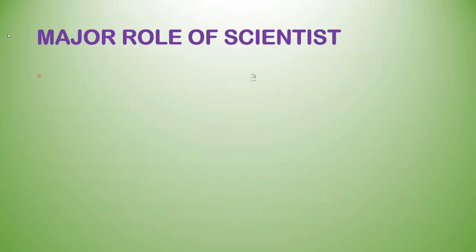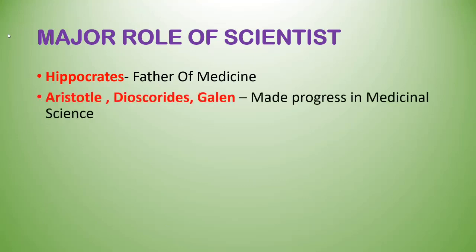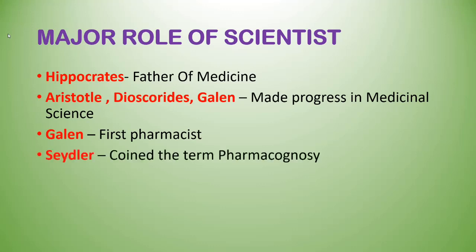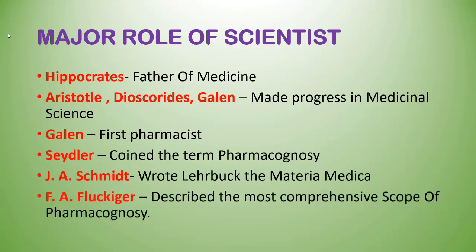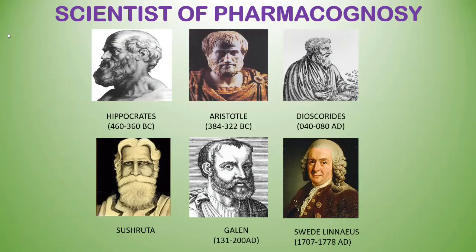Here we discuss the major role of scientists. First, Hippocrates, known as the father of medicine. Next, Aristotle, Dioscorides, and Galen, who made progress in medicinal science — Galen being the first pharmacist. Seidler coined the term pharmacognosy. J. Chidmit wrote the later work Materia Medica, and F. F. Luckyberg described the most comprehensive scope of pharmacognosy.